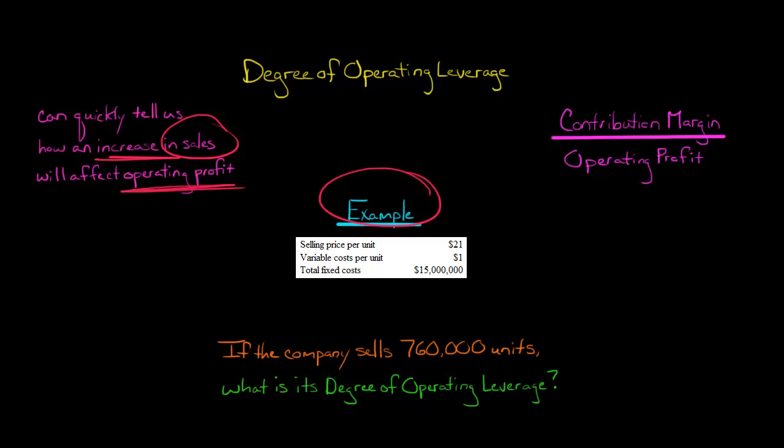So here's the example. Let's say we have a company with one type of product, and the selling price per unit is $21. And every time they sell a unit, they incur variable costs of $1. And then the company also has fixed costs of $15 million.